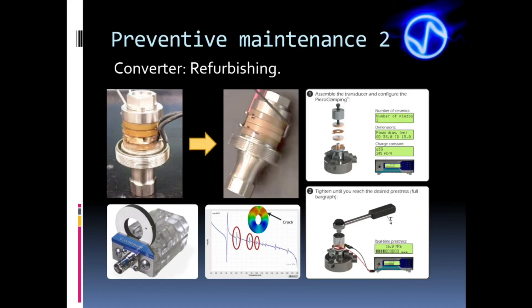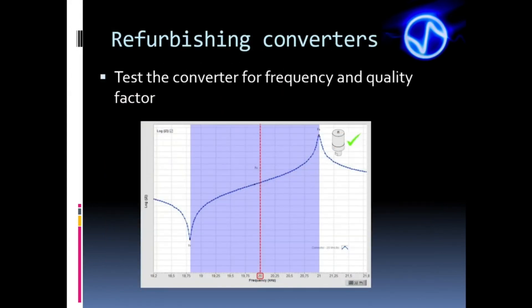In addition to replacing cracked ceramics, we also replace cracked metallic masses. There is a specific training that deals exclusively with the assembly and refurbishing of ultrasonic converters. So, contact us at the email address below for more information. After refurbishing, it is necessary to test the converter using TRZ as we have already learned.